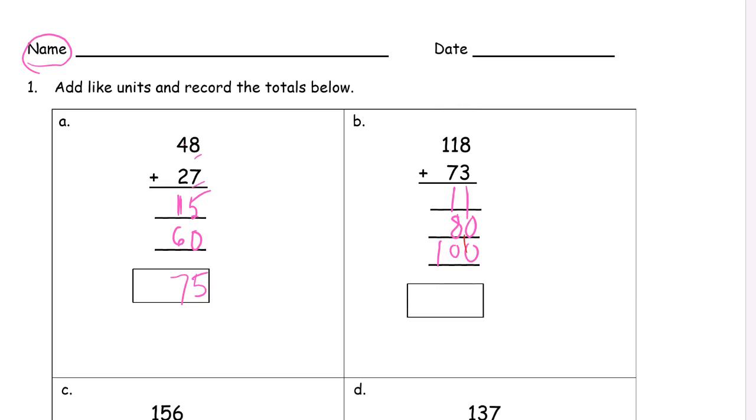So here we have one plus zero plus zero. That's just one. And one plus eight is nine. One hundred ninety-one. That's it.